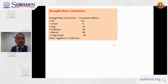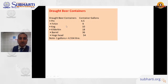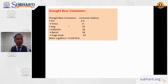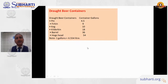Draft beer containers found in pubs and bars include: a pin (4.5 gallons), a firkin (9 gallons), a cask (10 gallons), a kilderkin (18 gallons), a barrel (36 gallons), and a hogshead (54 gallons). Hogshead is a commonly asked exam question — it is a draft beer container with a capacity of 54 gallons.